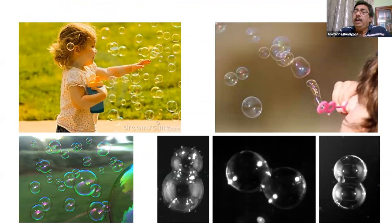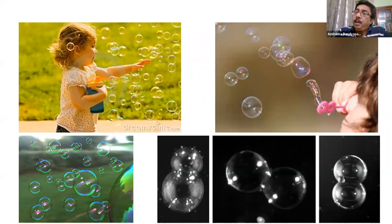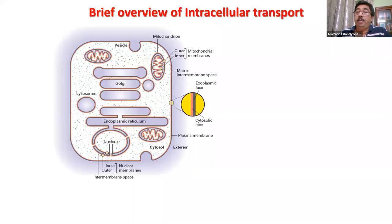Fundamentally, the process of intracellular trafficking is conceptually very simple. Our cell membrane and intracellular membranes behave like soap bubbles — they stick to each other, they bud off from each other, and they're made of fairly similar stuff. One thing to note is that the intracellular membranes are a result of invagination of the cell membrane.